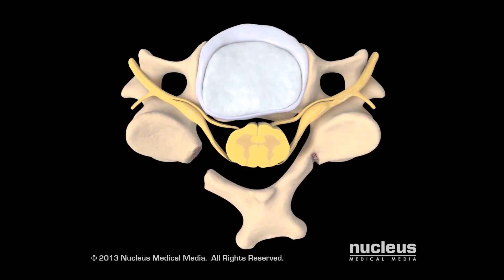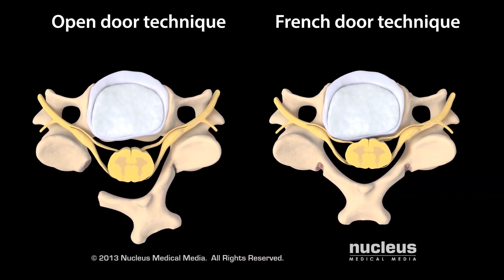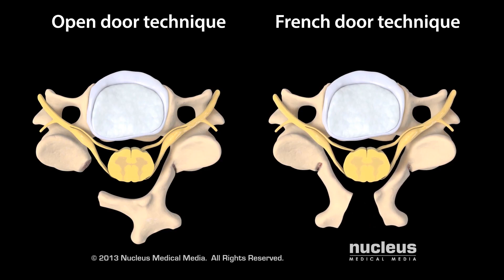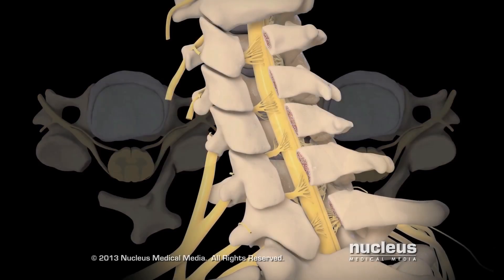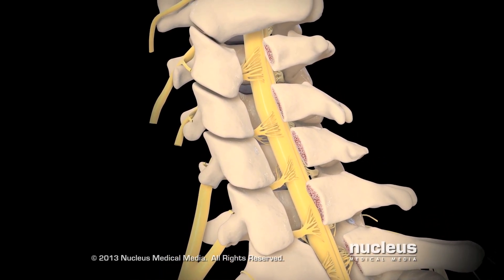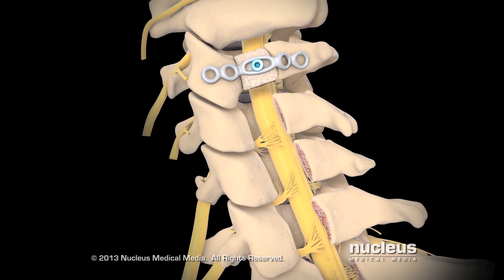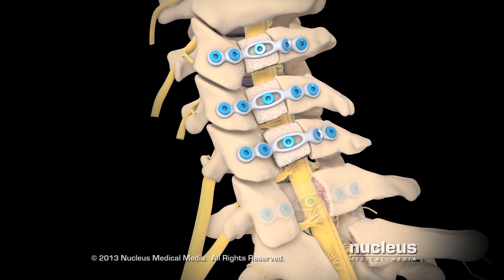This relieves the pressure on your spinal cord. If your surgeon uses the French door or double door variation on this technique, both troughs will be used as hinges. This will allow your surgeon to split the spinous process and open your vertebral arch in the middle. Usually, the vertebral arch will be opened on more than one of your cervical vertebrae. Bone graft material, along with metal plates attached to it, may be inserted into each vertebral arch to hold it open.